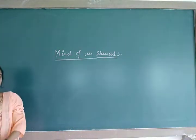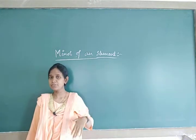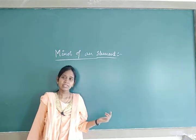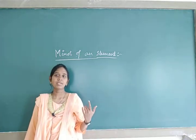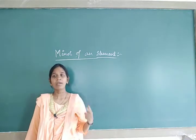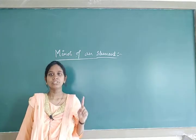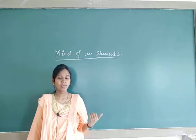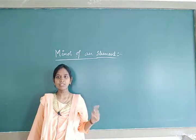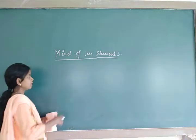So, minor of an element — the name itself suggests 'minor' means reducing. If you have a 2×2 determinant, by deleting some row and column you make it 1×1. If you have a 3×3 determinant, by reducing it becomes 2×2, and again by reducing it becomes 1×1. If you already have a 1×1 determinant, do not reduce — the minor of that element is the 1×1 element itself.